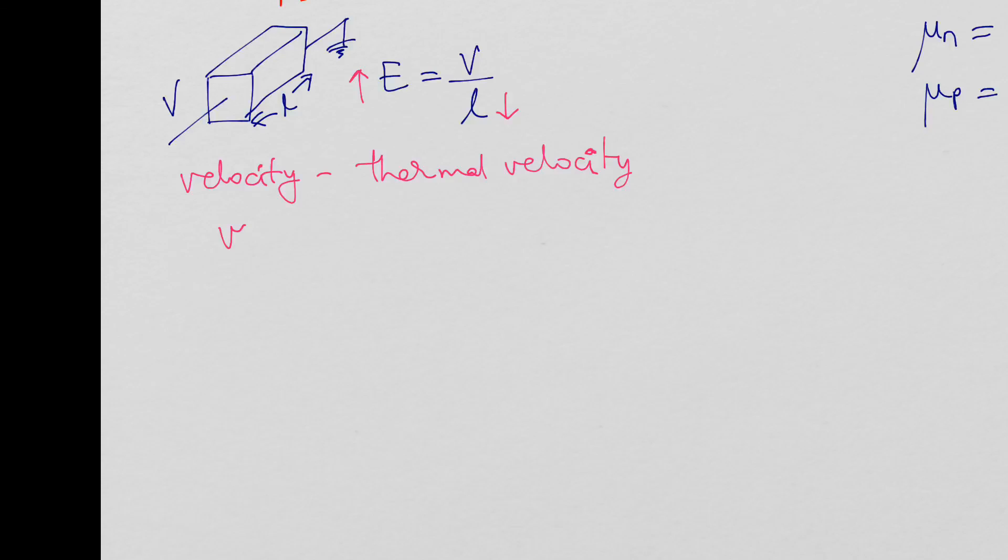The drift velocity VD is mu times E. But once E becomes too large, if you plot drift velocity with respect to electric field, you would expect a straight line with slope mu, but after a certain point the drift velocity saturates.